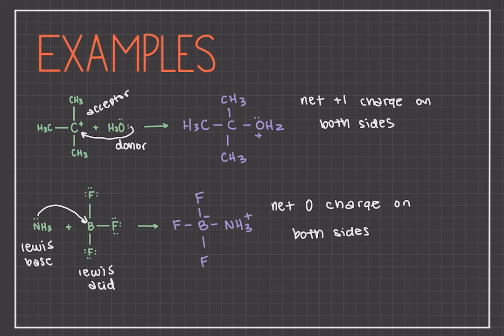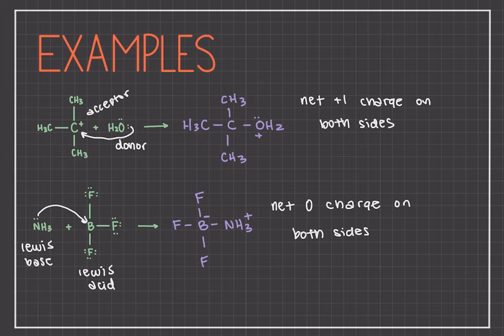That concludes this video. I hope you now have a better understanding of curved arrow notation and how to use it. Going forward, we will use it regularly in all of our organic chemistry videos — when it comes to alkanes, alkenes, alkynes, everything. Curved arrow notation is really, really important, especially because these reactions will just get more and more complicated, so this video is only the beginning.